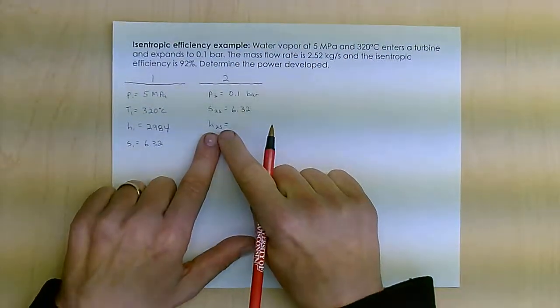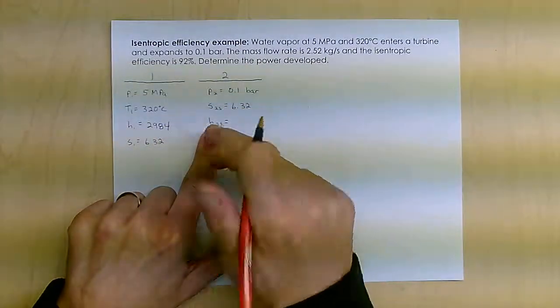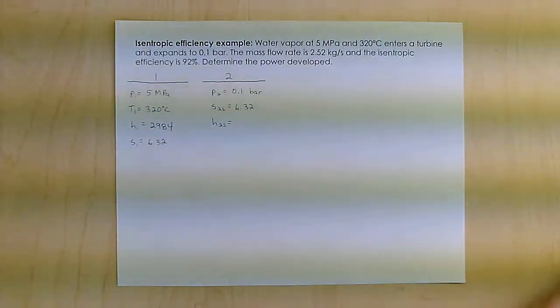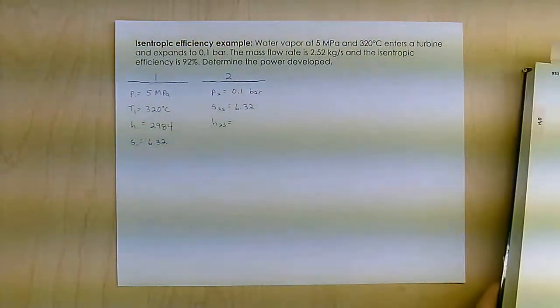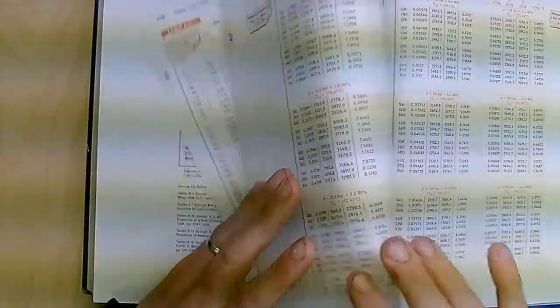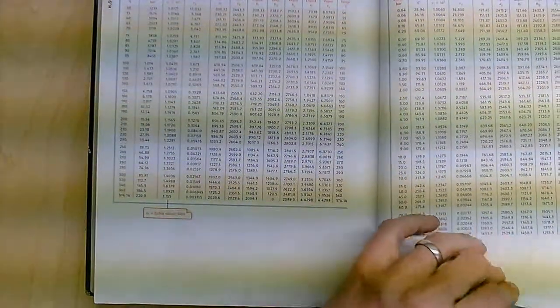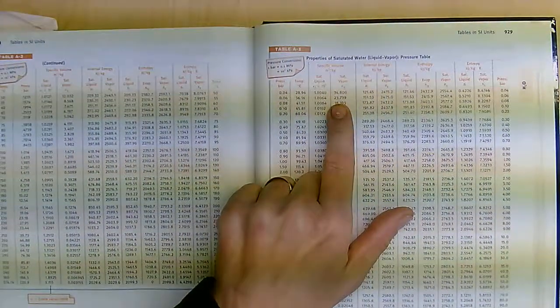This would be the enthalpy for the best-case scenario of the turbine. That best-case scenario is an isentropic scenario where there's no change in entropy. So I'm going to go to 0.1 bar. I'm looking in table A3, this is the saturation table.